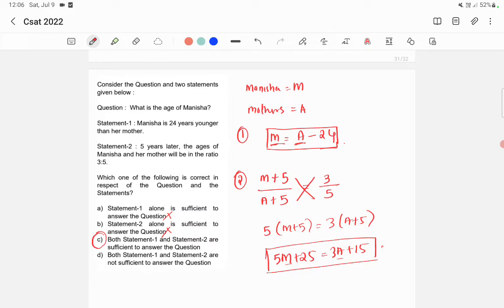So once I got two equations, I'm stopping my calculation because you have two variables and two equations. So it is understood that you will be able to find the answer. You can put C as the correct answer.